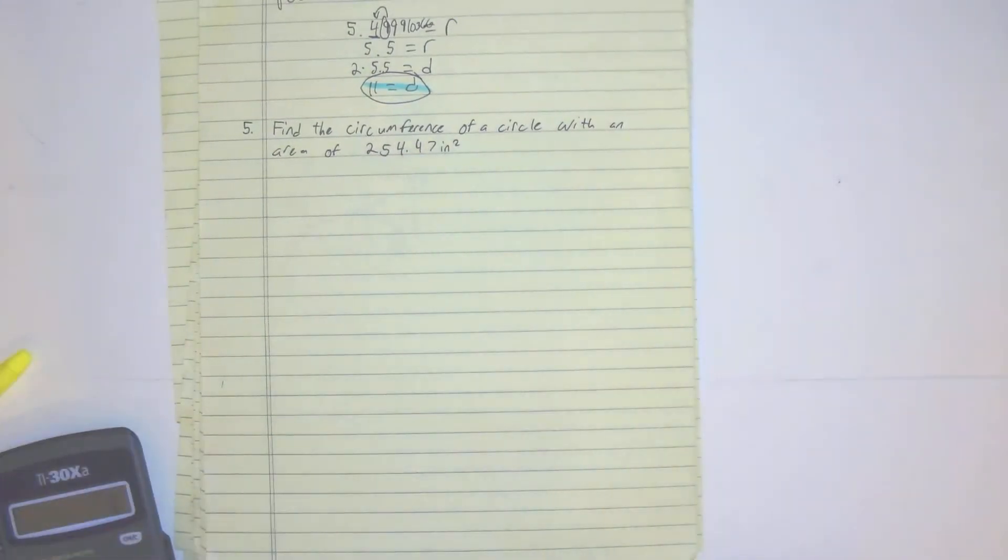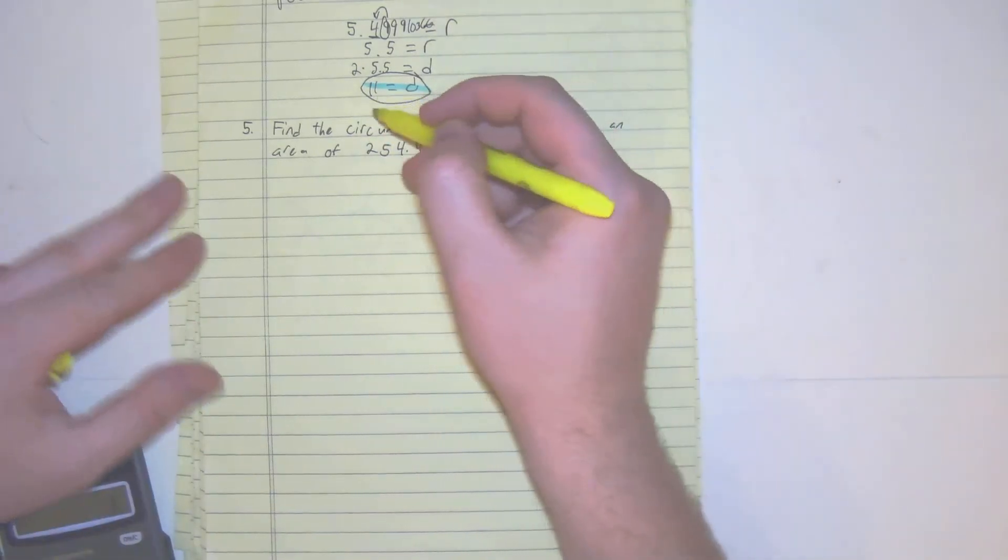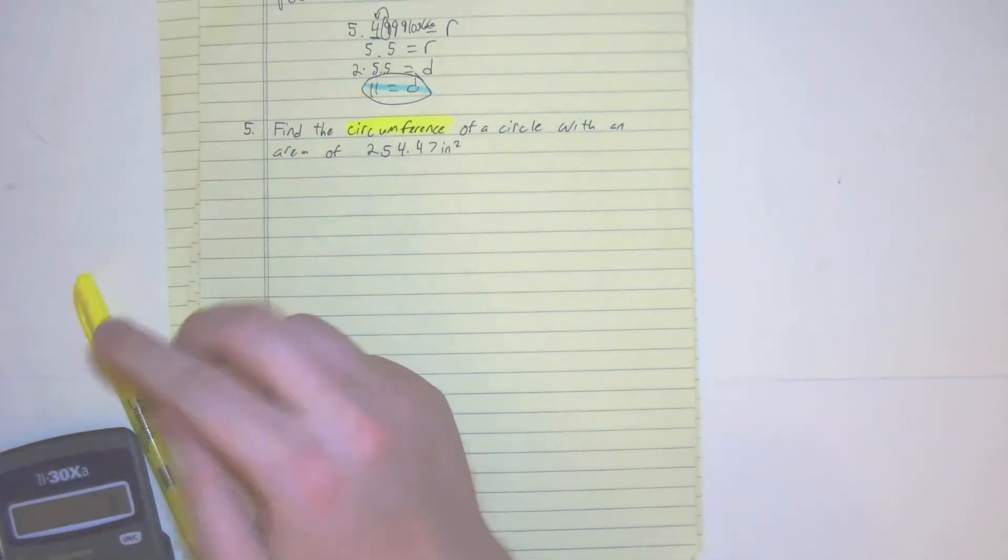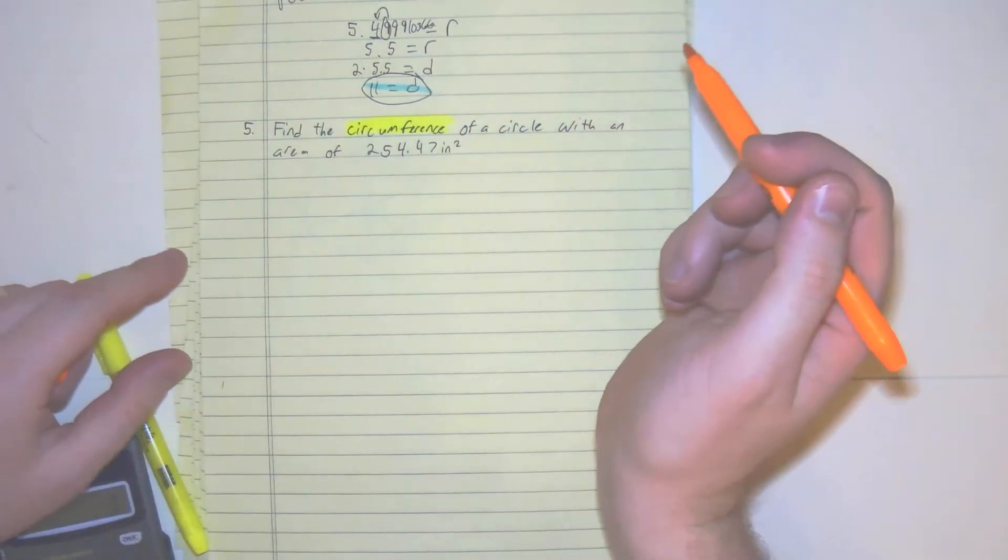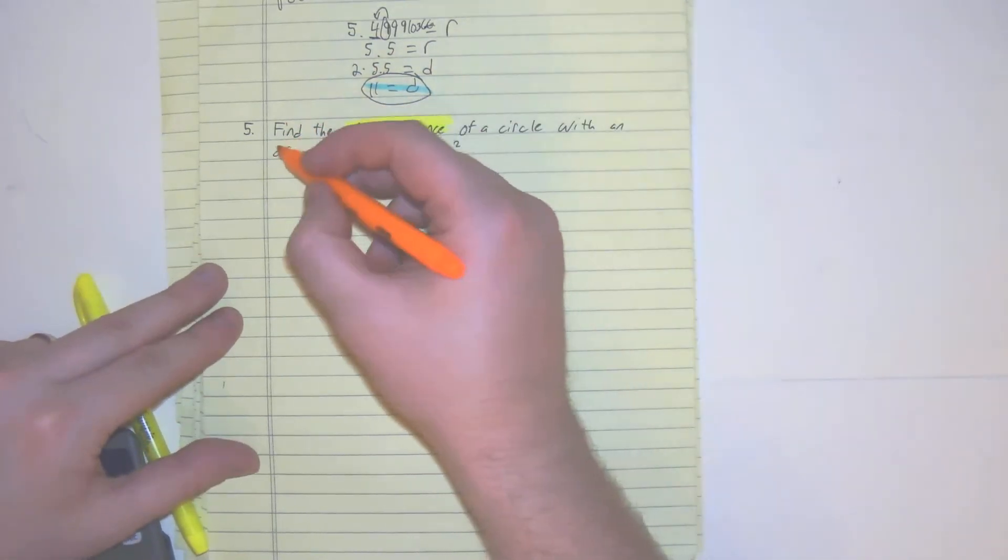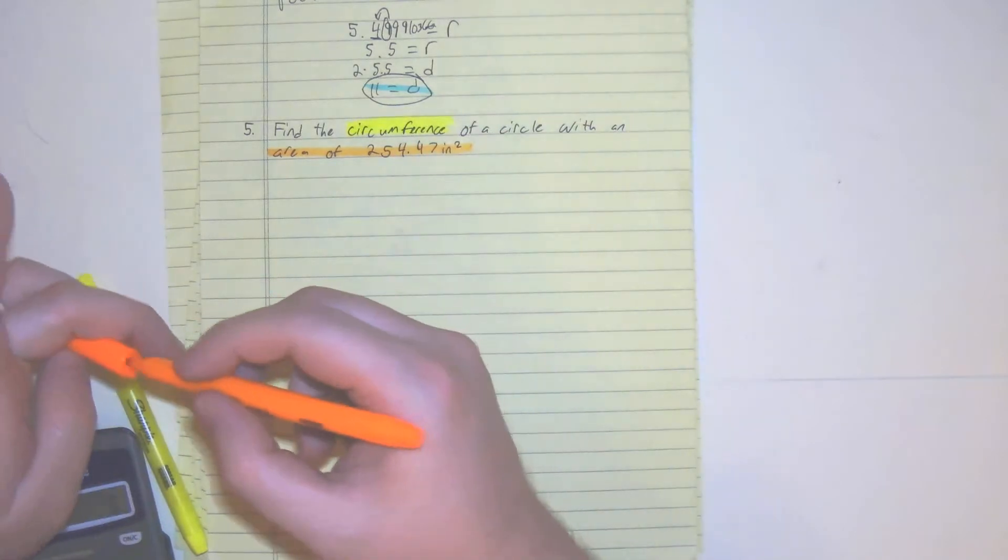Okay, so number 5 says find the circumference of a circle with an area of 254.47 inches squared. So we're given the area and we want to find the circumference.